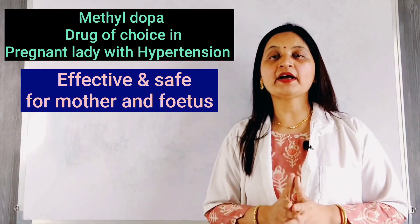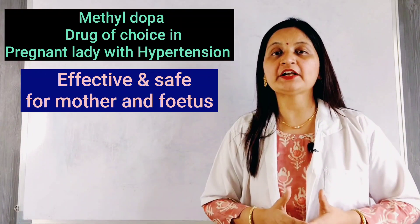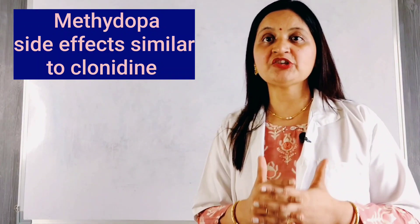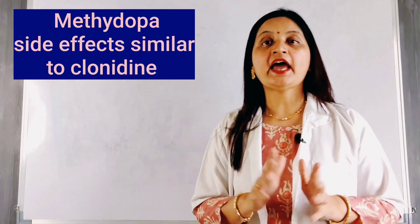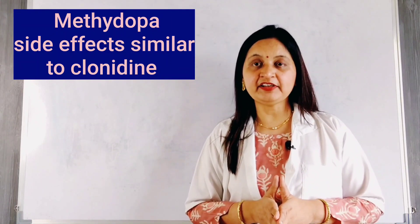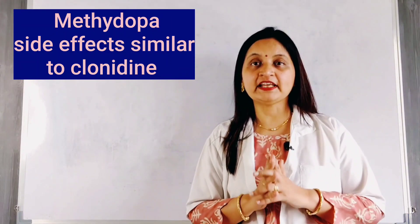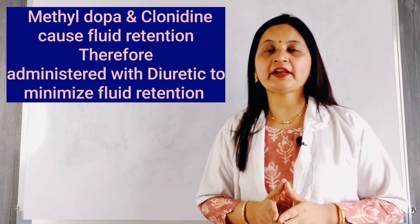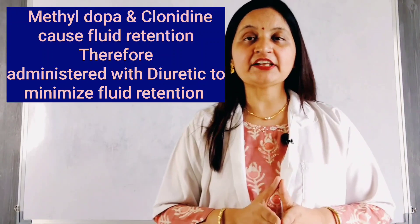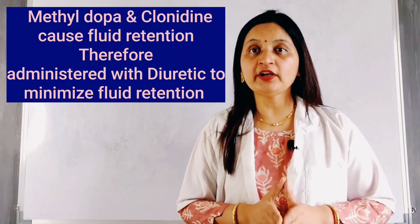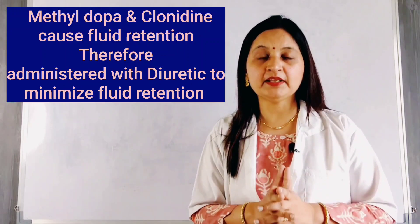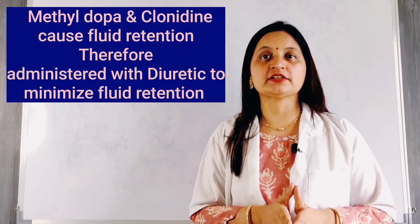Alpha-methyldopa can produce side effects similar to those of clonidine, including central side effects such as sedation, restlessness, and headache, as well as antisecretory effects causing dryness of mouth and nasal stuffiness. Both alpha-methyldopa and clonidine can cause fluid retention and weight gain; therefore, they are preferably administered along with a diuretic agent to minimize fluid retention.